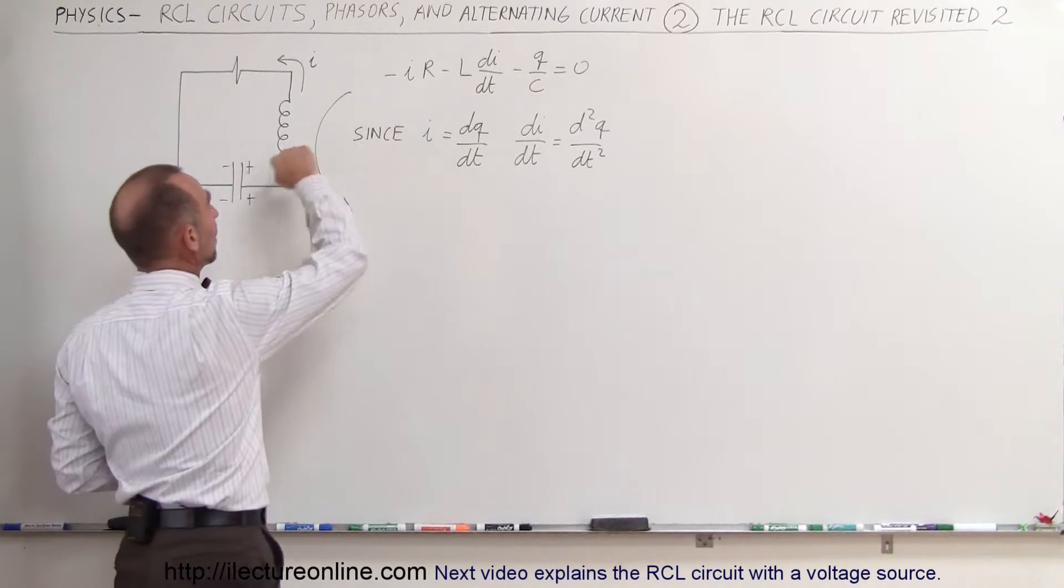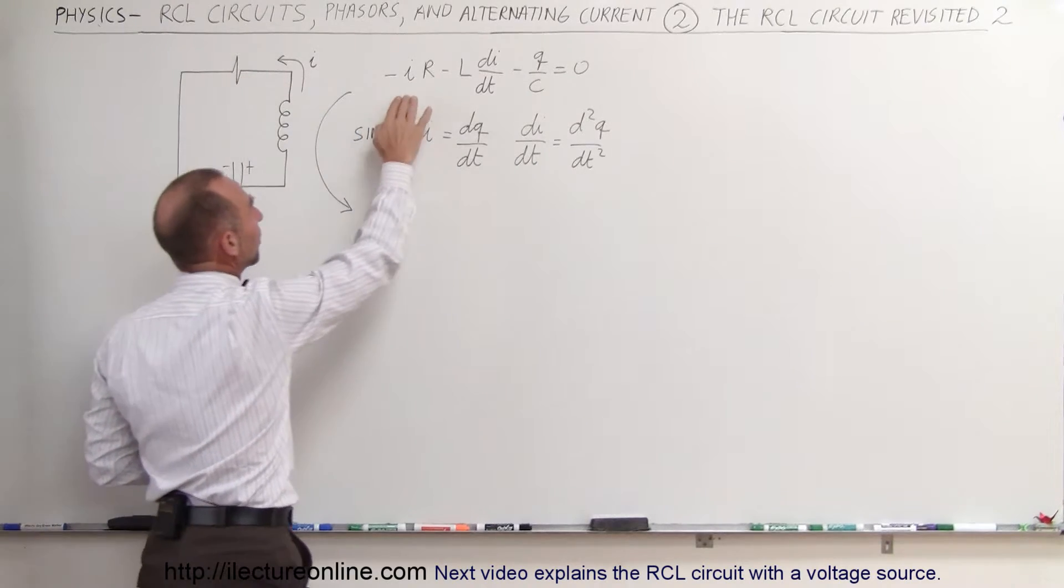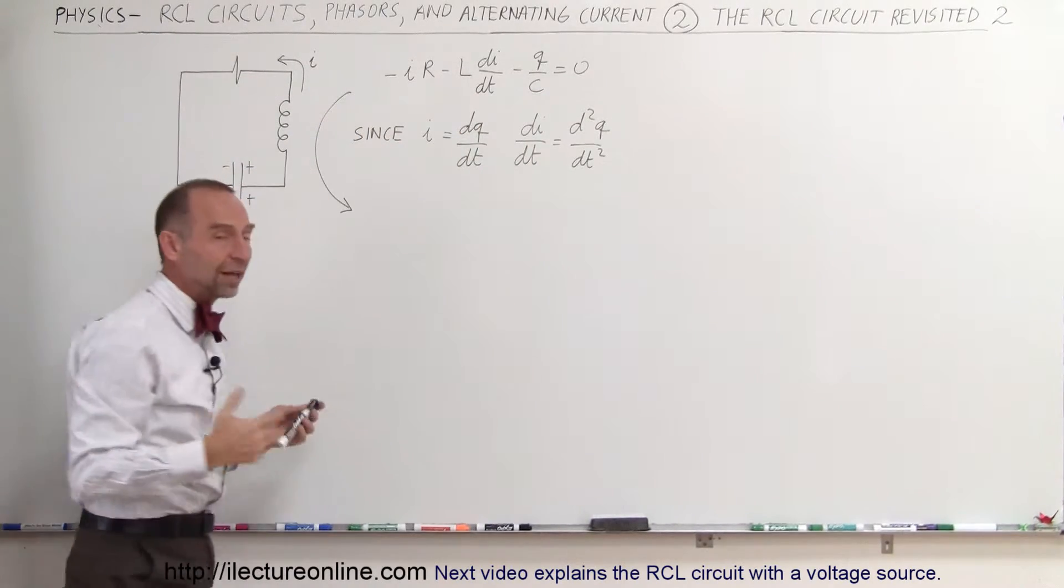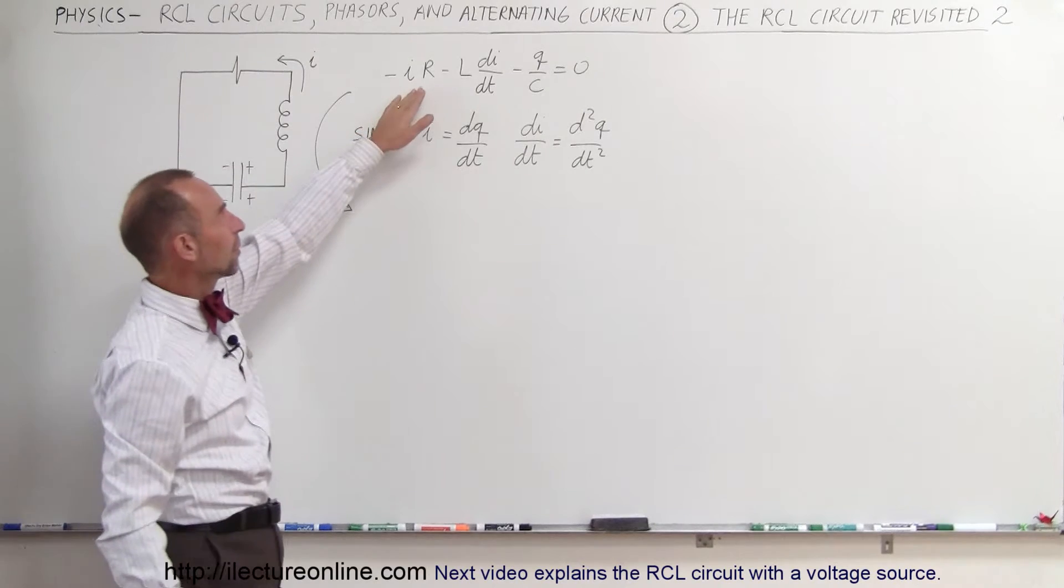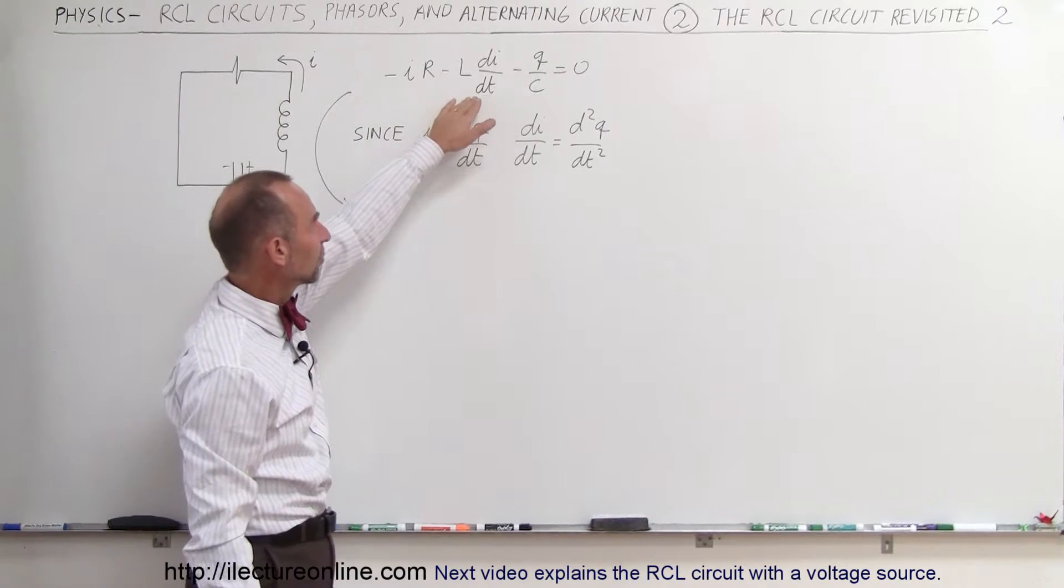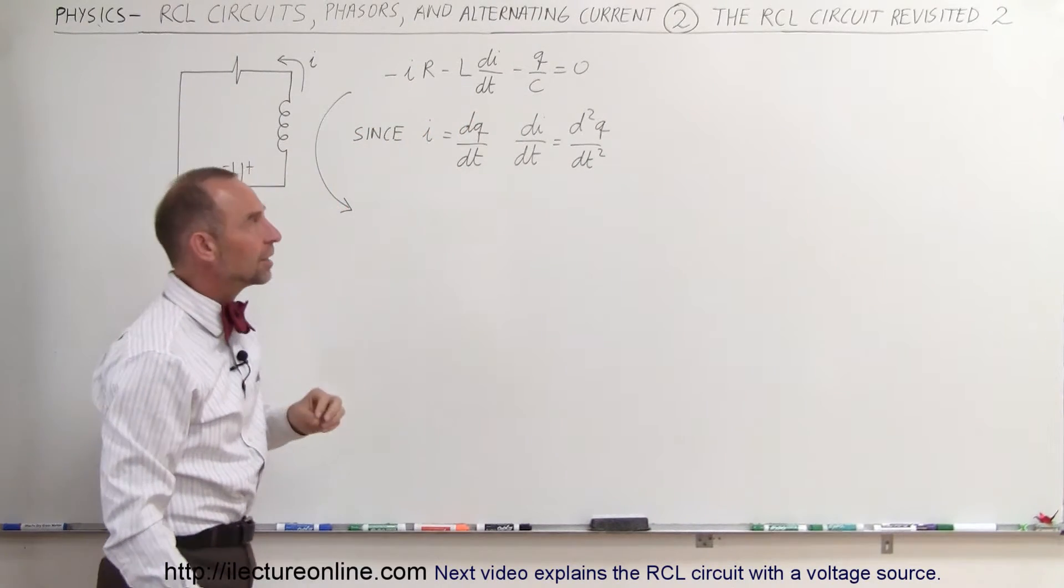So here's the equation that when we go around the circuit and we add up all the voltages across the circuit, they should add up to zero. We have the voltage drop across the resistor, the voltage drop across the inductor, and the voltage drop across the capacitor.